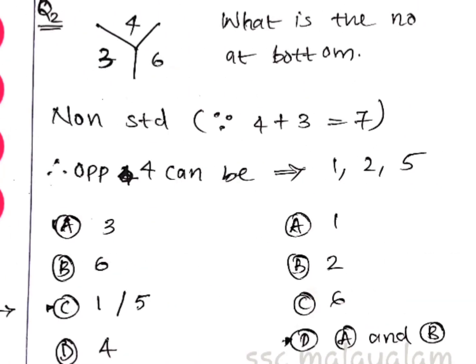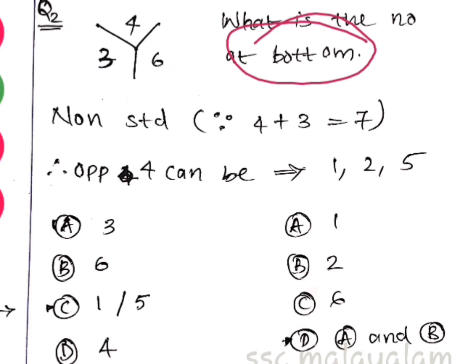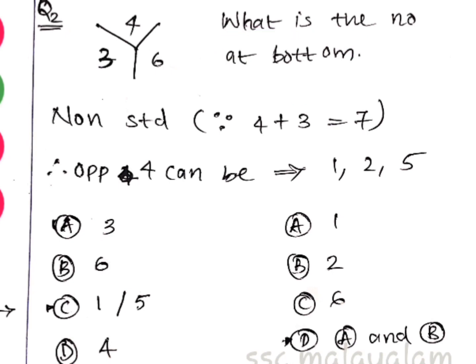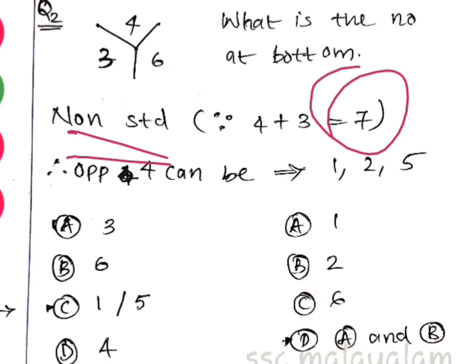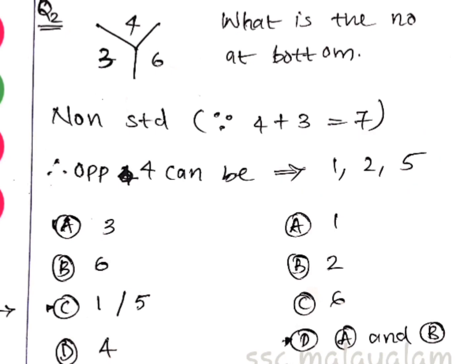Let's look at this next problem. I told you where the die is. What is the number at the bottom? Use the number at the bottom — there is a concept of opposite numbers and a formula for finding them. So we have standard and non-standard dice. In non-standard dice we have fixed numbers on fixed sides and we look at opposite sides.